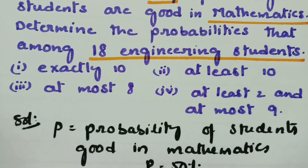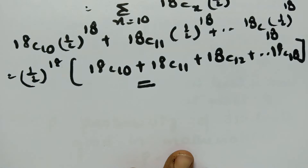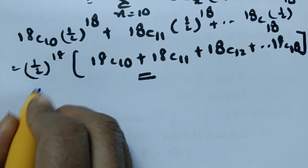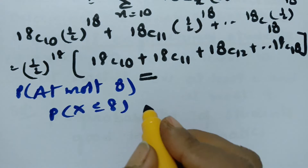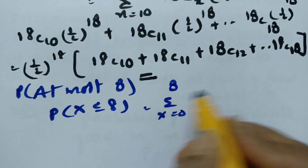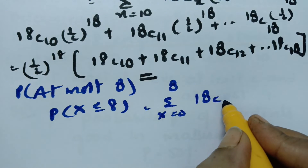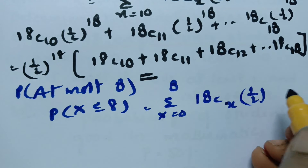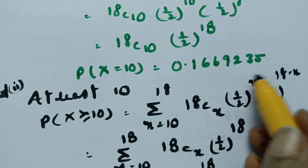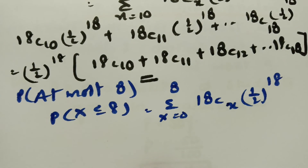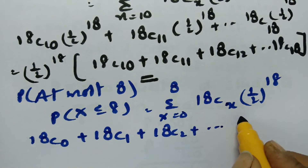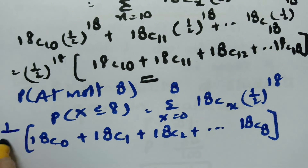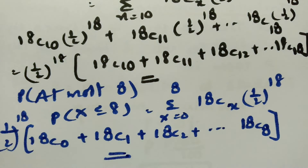The third question is at most 8, meaning a maximum of 8. The probability of getting at most 8 is P(X ≤ 8), which equals the sum from X=0 to 8 of 18CX times (1/2)^18. This gives us [18C0 + 18C1 + 18C2 + ... + 18C8] times (1/2)^18. This is the answer for at most 8.